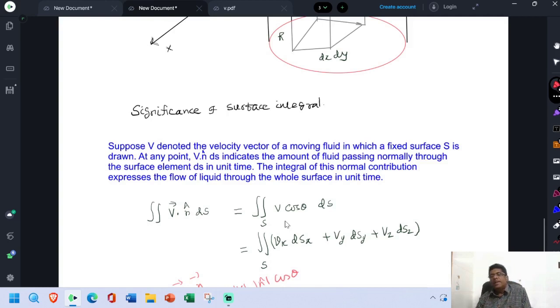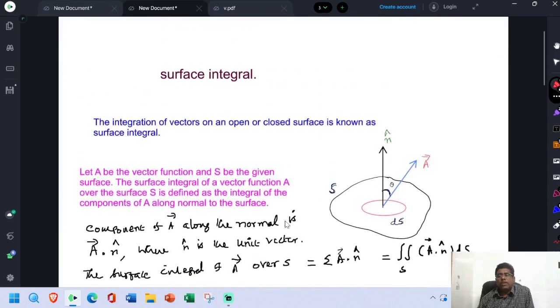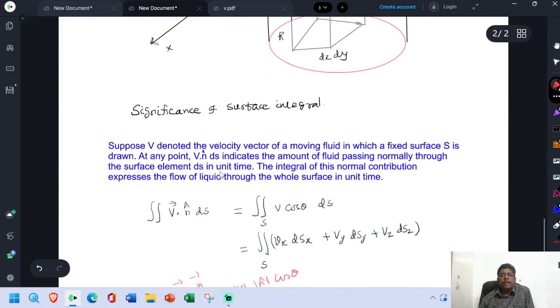Which means that if we consider V be the velocity of the fluid, fluid means which includes liquid and gases. The amount of liquid going out from the segment Ds in unit time is given by V dot n into Ds.